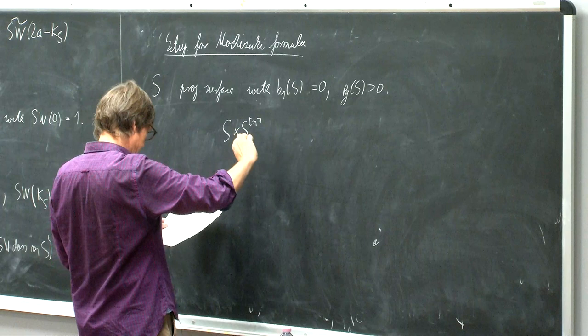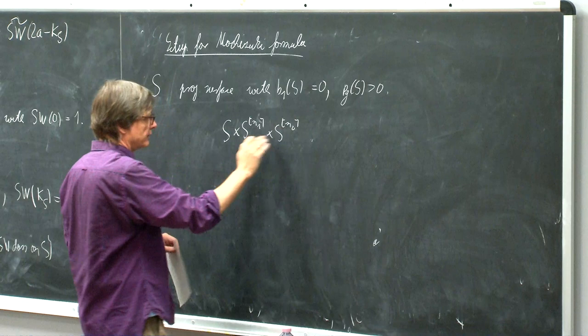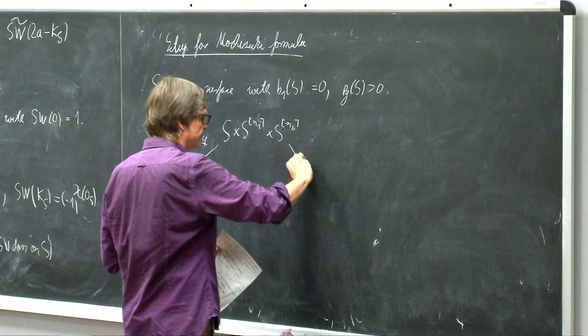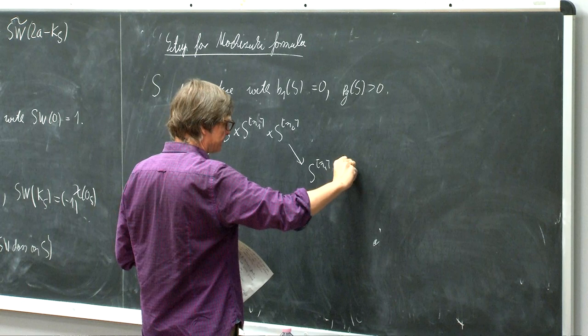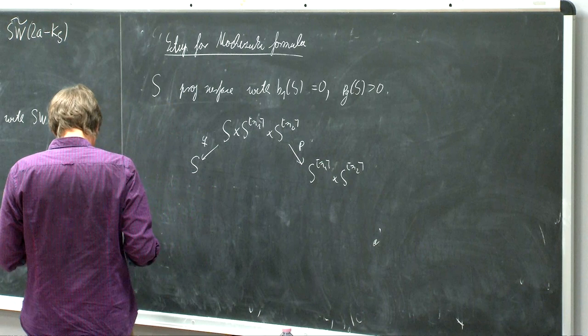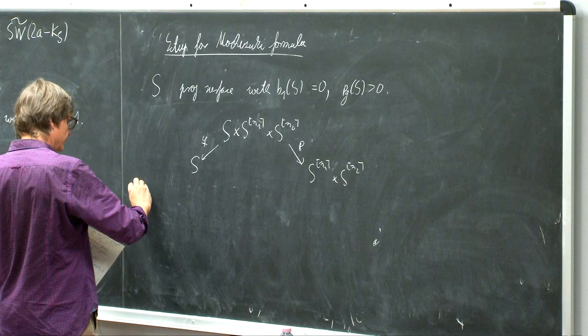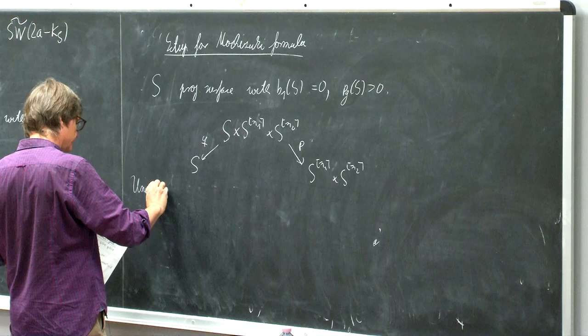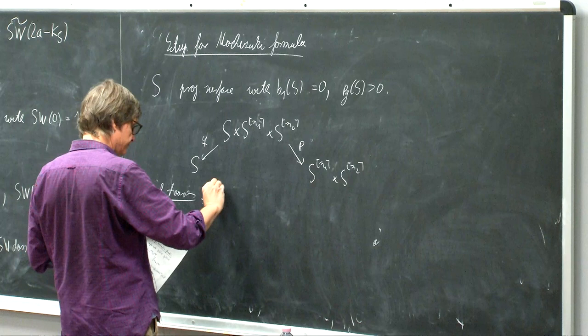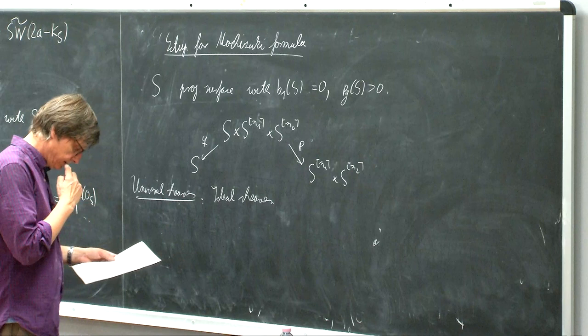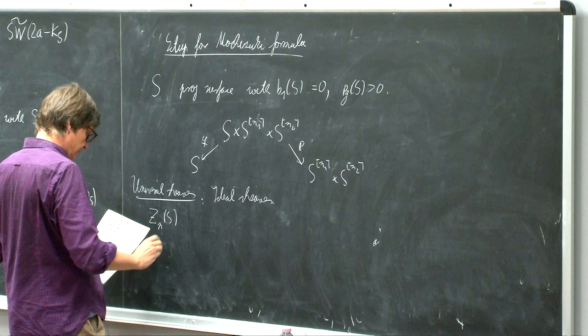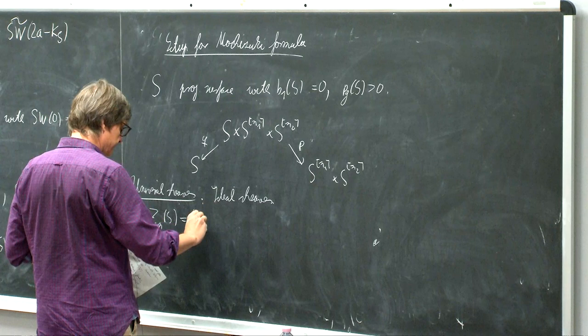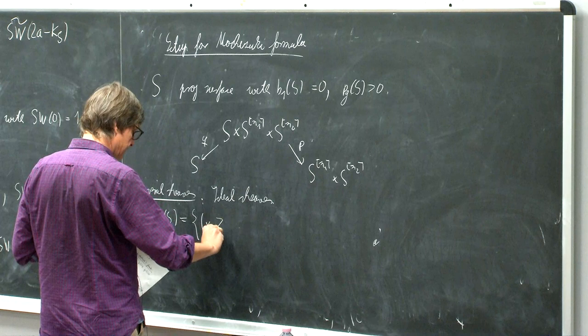Otherwise we also have a formula, but it will be more complicated — a formula in terms of the Seiberg-Witten invariants. This is the first part, and now we have to get into the Mochizuki formula, which is unfortunately rather complicated. First we have to remember all these tautological sheaves. We have S, a projective surface with our assumptions.